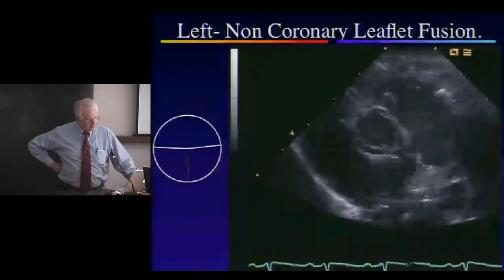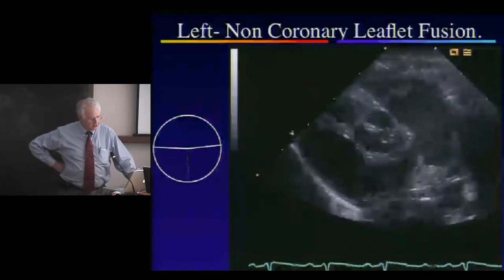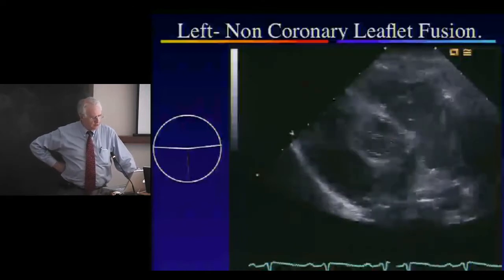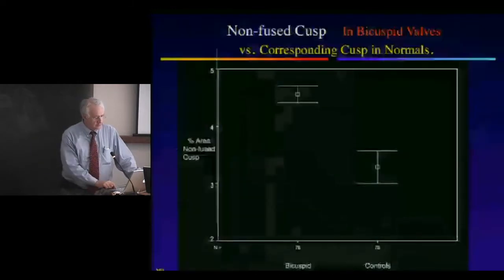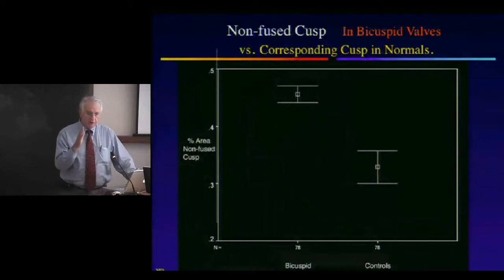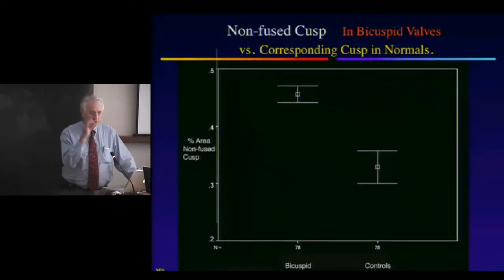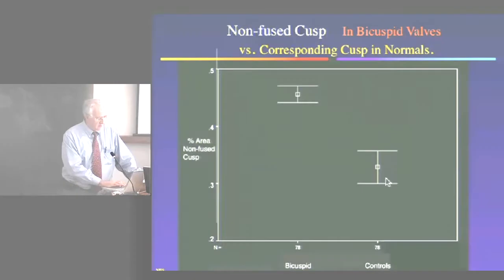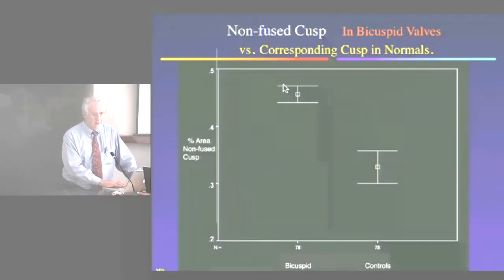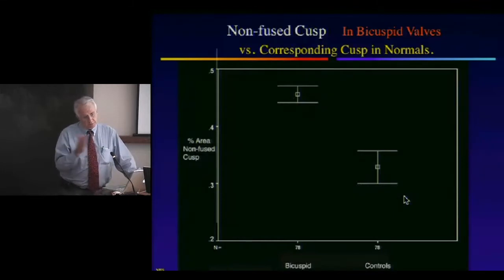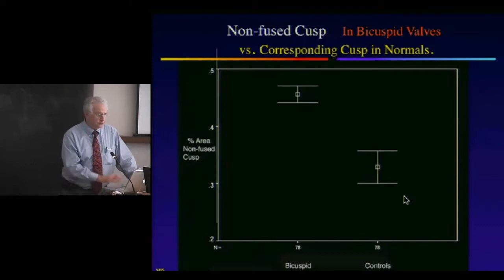We went through the entire database and found only one patient where it looked like there was a fusion of the left non-coronary cusp — and that's the only example, so we took it out. We measured the dimensions of the various cusps, and the area of the non-fused coronary cusp was much greater in bicuspid valves than its corresponding cusp in non-fused valves.